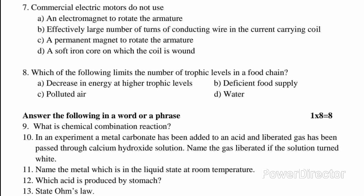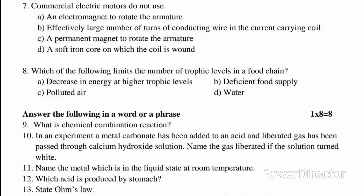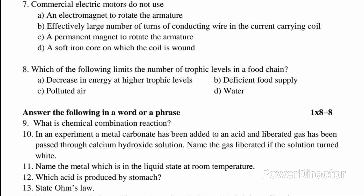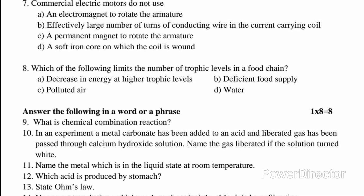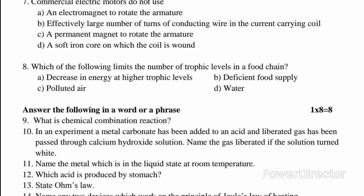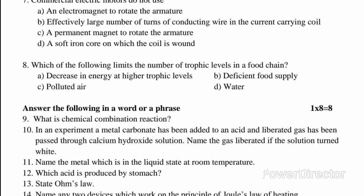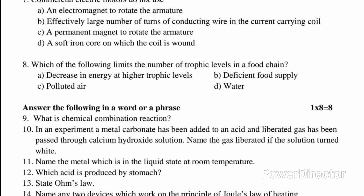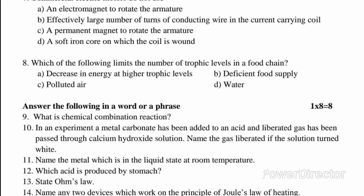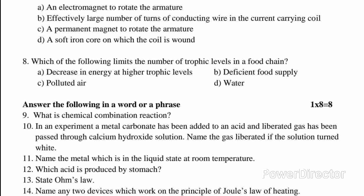Question 8: Which of the following limits the number of trophic levels in a food chain? A. Decrease in energy at higher trophic levels. B. Deficient food supply. C. Polluted air. D. Water. Answer: A. Decrease in energy at higher trophic levels.